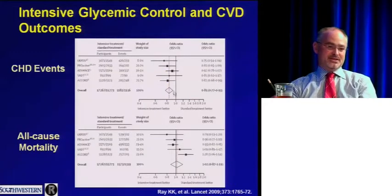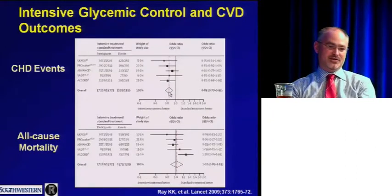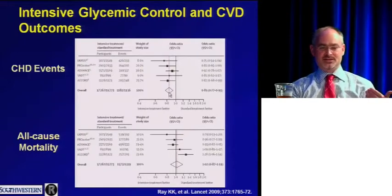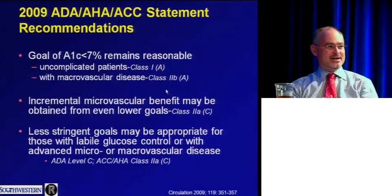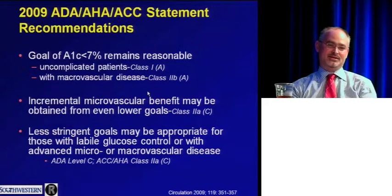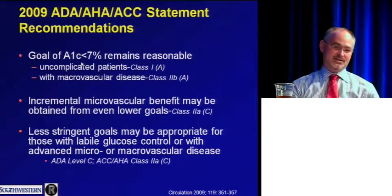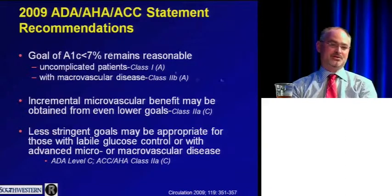The meta-analysis of all these trials shows a 15% statistically significant reduction in myocardial infarction, and a point estimate of neutrality for mortality. This ACCORD observation of increased mortality has not been seen in any other trial. Targeted glucose control at present standards still appears both safe and slightly beneficial from a cardiovascular perspective. The ADA, AHA, and ACC have continued to endorse an A1C target of less than 7 — not less than 6.5 or 6 — for patients with cardiovascular disease.